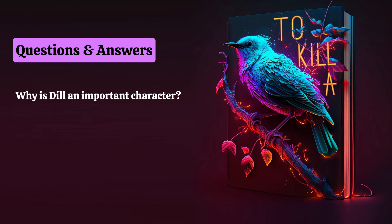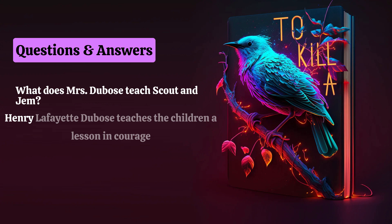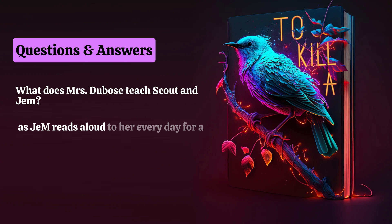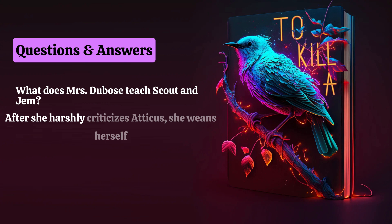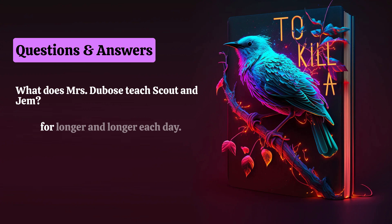What does Mrs. DuBose teach Scout and Jem? Although she is a mean, racist neighbor, Mrs. Henry Lafayette DuBose teaches the children a lesson in courage. As Jem reads aloud to her every day for a month — a punishment for destroying her camellia bushes after she harshly criticizes Atticus — she weans herself from her morphine addiction by refusing her medicine for longer and longer each day.